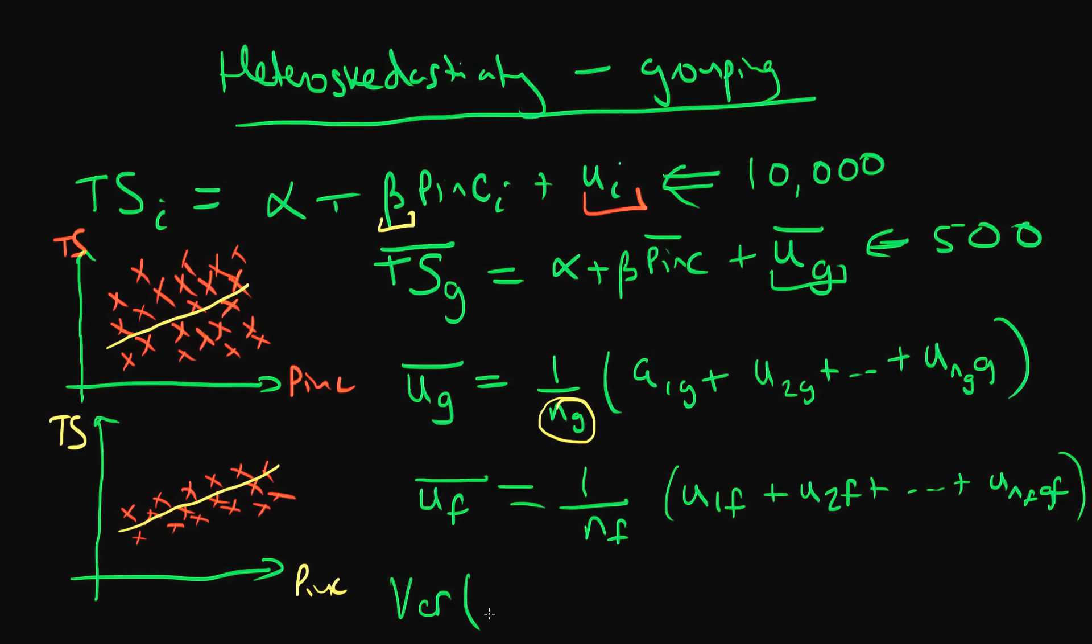So in principle, this means that the variance of the average level of error in group G does not equal the variance of the average level of error in group F, because the average level of error depends on the number of individuals which are used in these specific groups.